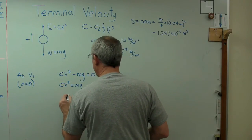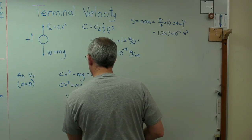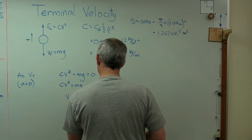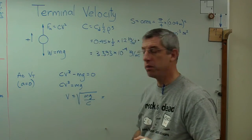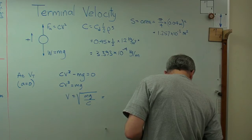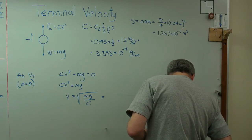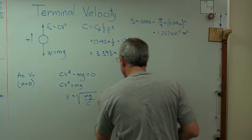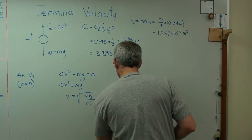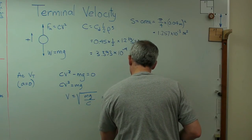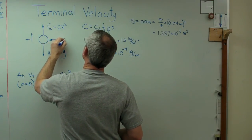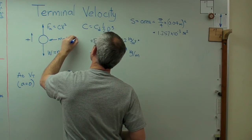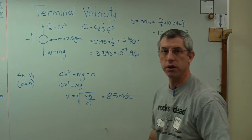And that means that v equals the square root of mg over c. And if I plug all these numbers in, I get this really low number. I get 8.5 meters per second. And that's assuming that the mass of the ball is 2.5 grams. I've got to make sure I give you that.